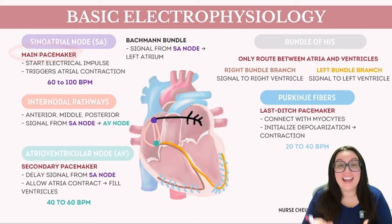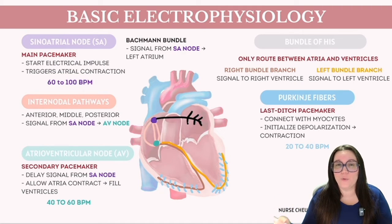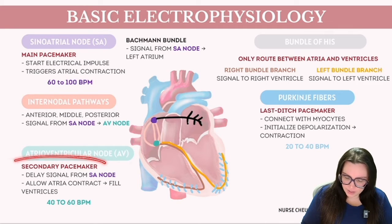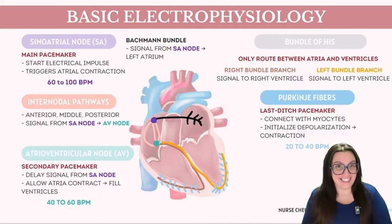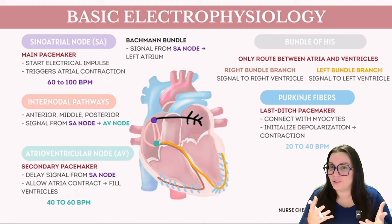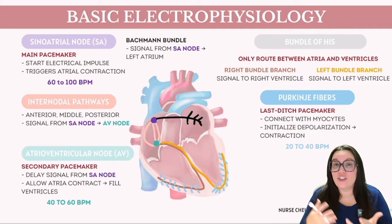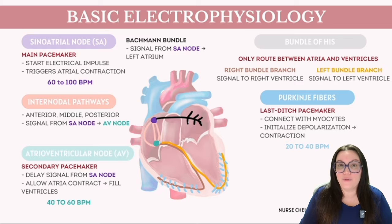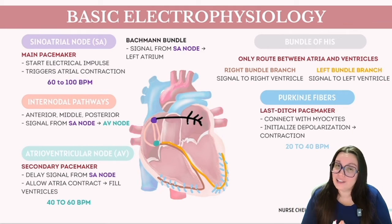The SA node is the heart's primary pacemaker with a natural pace of 60 to 100 beats per minute, adjustable based on the body's needs. The AV node is the secondary pacemaker with an intrinsic rate of 40 to 60 beats per minute. The bundle of His and bundle branches share that same 40 to 60 beats per minute range, while the Purkinje cells and ventricular myocytes have a fallback rate of 20 to 40 beats per minute — truly the last-ditch pacemaker, potentially life-threatening if not addressed.